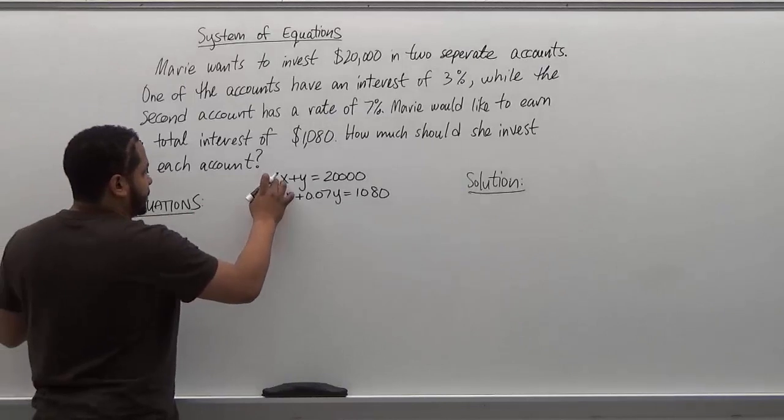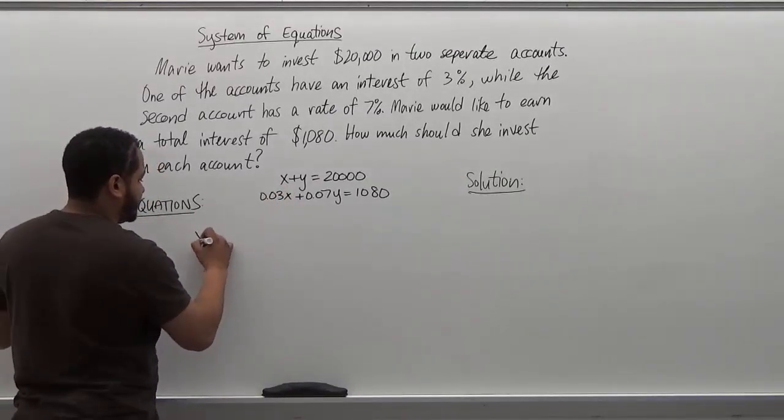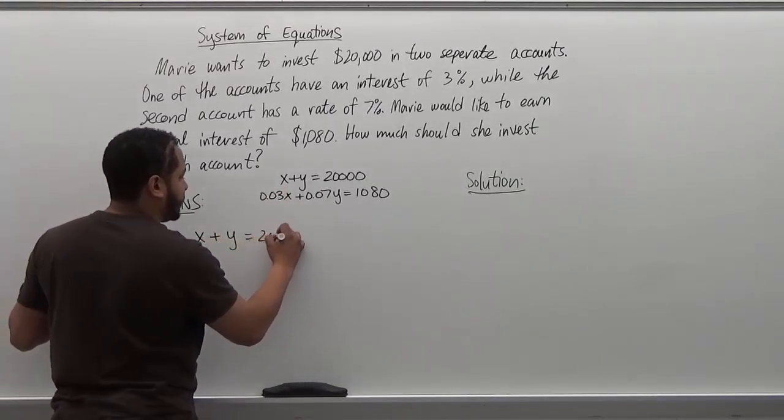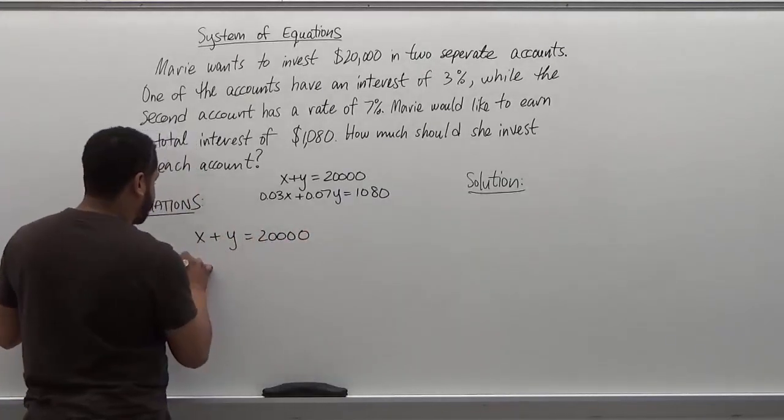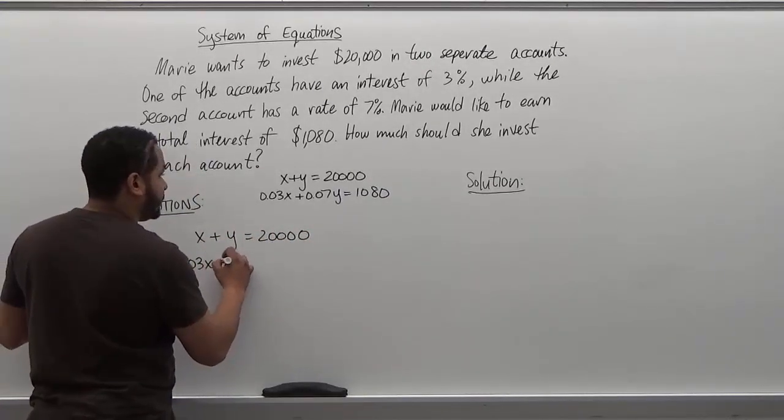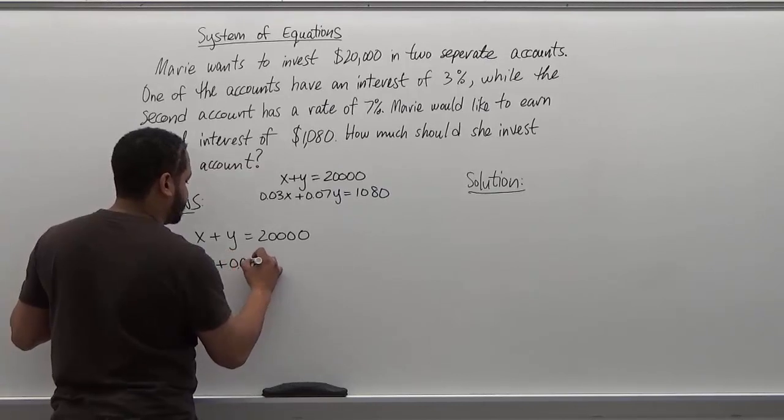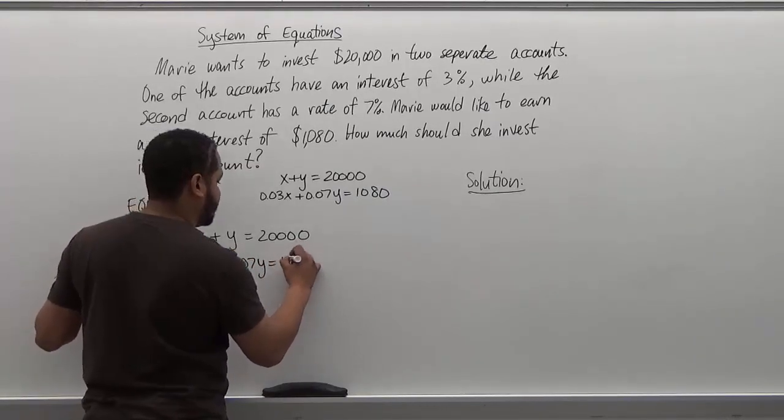Keeping that in mind, let's begin by transforming the two terms and augmenting our system. So we have x plus y equals $20,000, and we have 0.03x plus 0.07y equals $1,080.